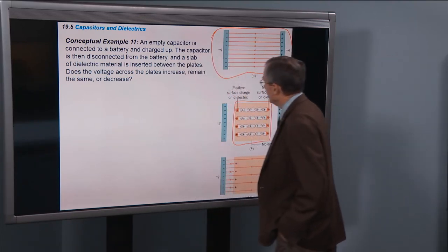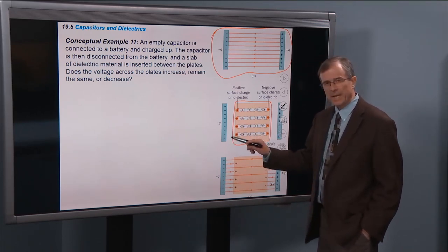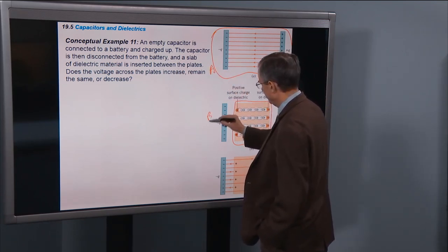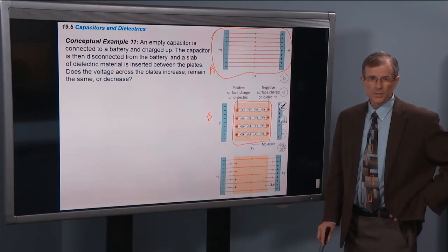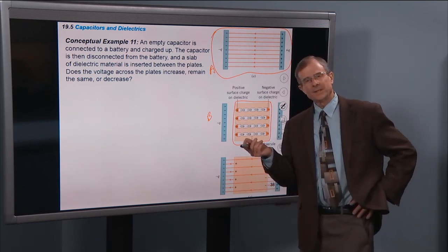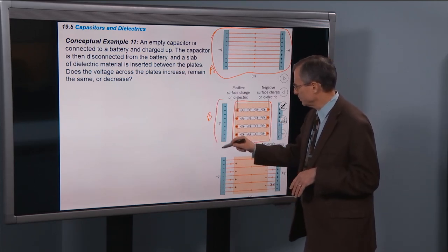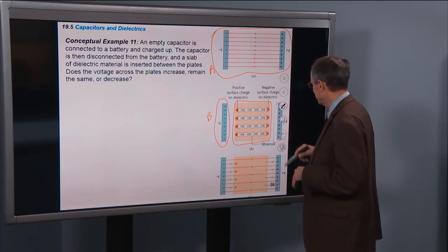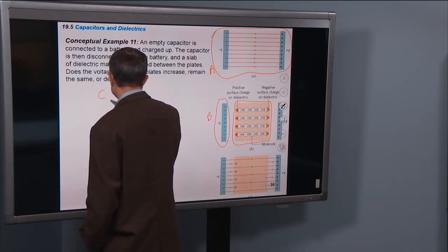So the real issue here is to ask, what's staying the same between here and here? And the answer is that the charge has to remain the same. Why? We've disconnected the capacitor from the battery. There's no place for the charge to go. It's stuck on this plate. This negative charge is stuck on that plate. The positive charge is stuck on this plate.